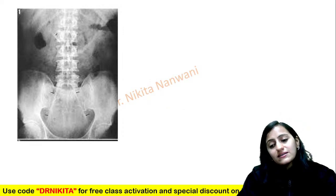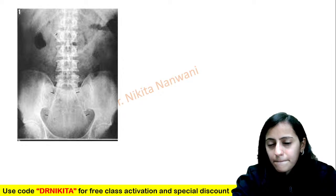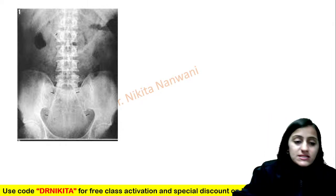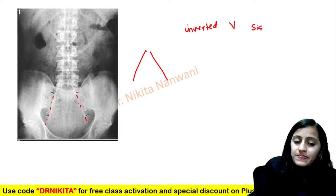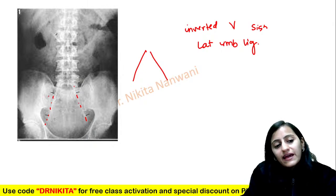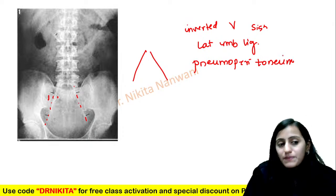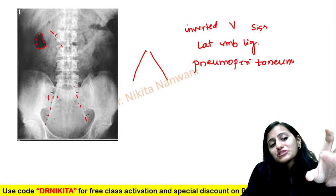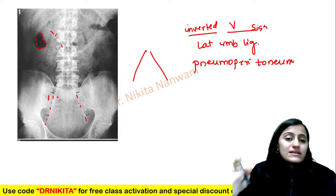Another inverted V sign: on abdominal X-ray, you can see white lines like an inverted V — these are the lateral umbilical ligaments, visible because there is air on both sides. This is seen in pneumoperitoneum. Other signs here include the visible falciform ligament and air collection in Morrison's pouch — all signs of pneumoperitoneum. The inverted V sign here is air surrounding the lateral umbilical ligament.